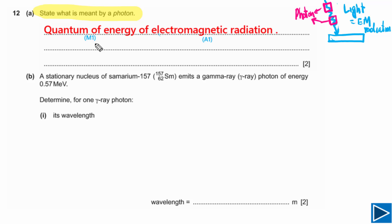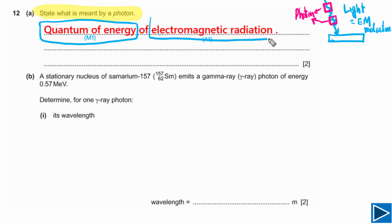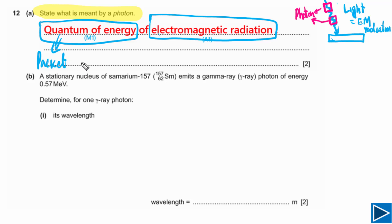Part A has two marks. The first mark is for writing 'quantum of energy' — that is the M mark. If you then write 'electromagnetic radiation,' you will get the A mark. But if you didn't write 'quantum of energy' or 'packet of energy,' you will not get any mark, because you must get the M mark to earn the A mark.